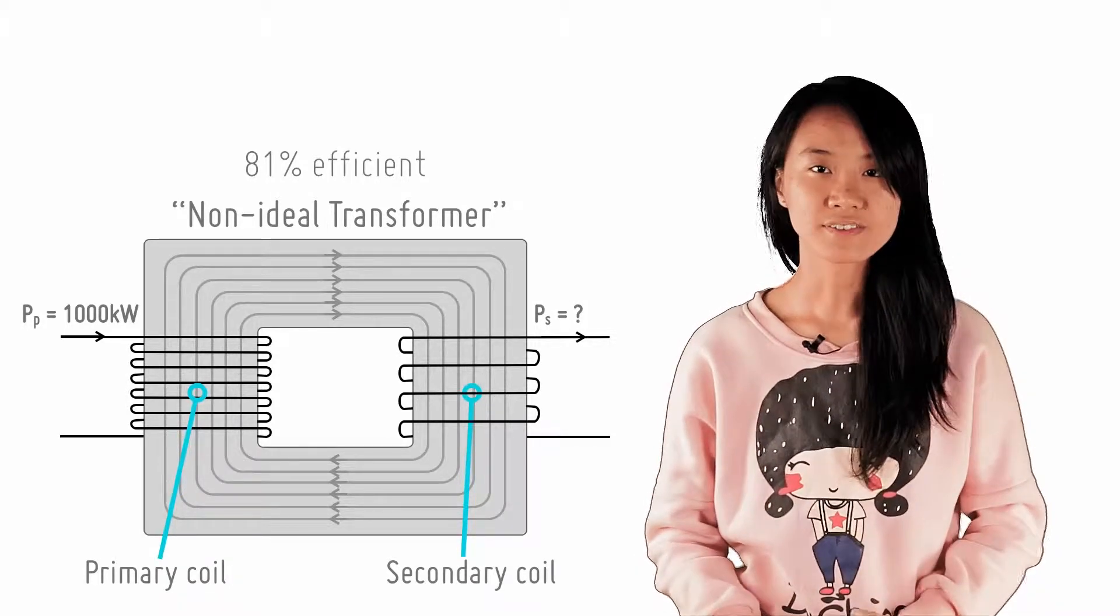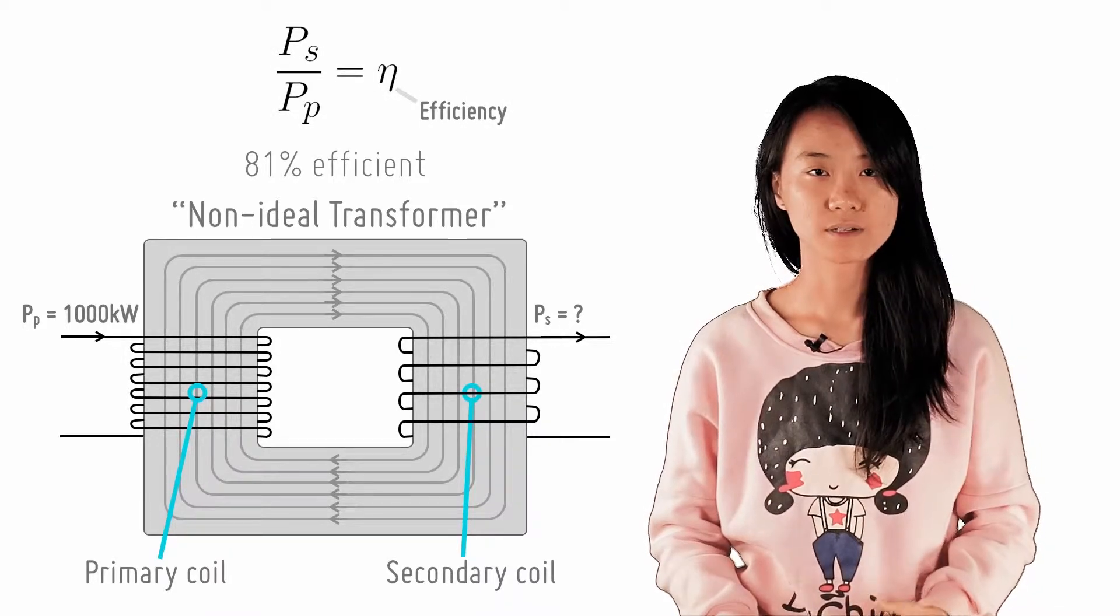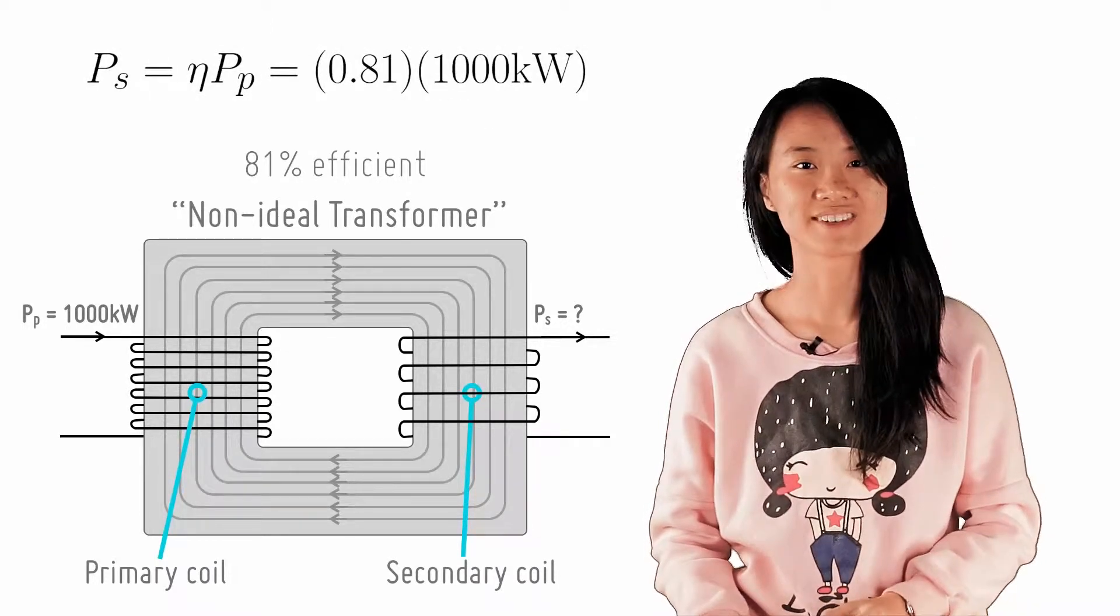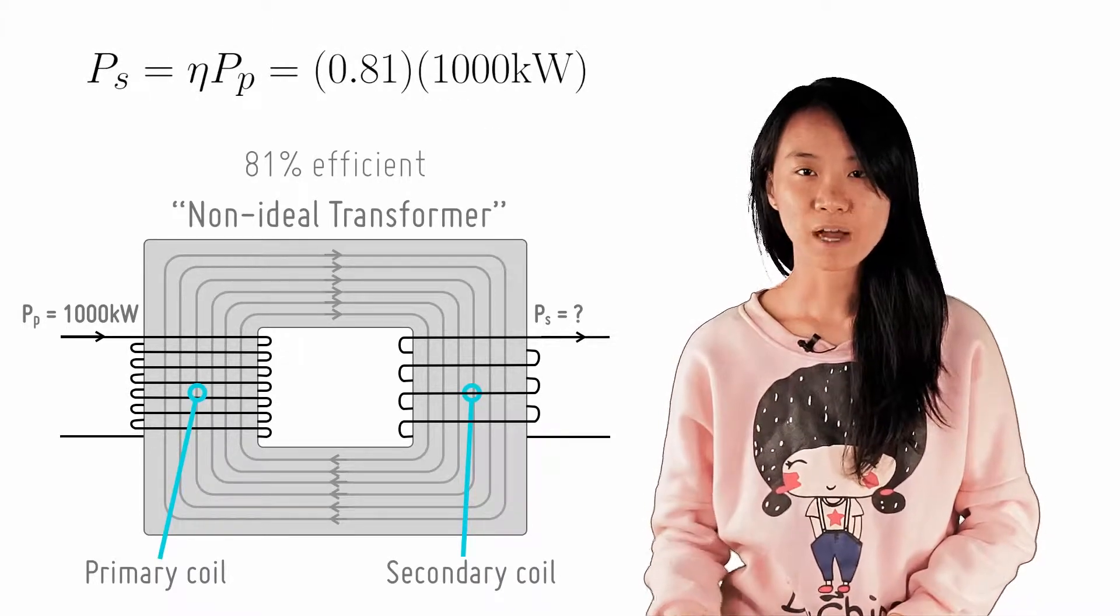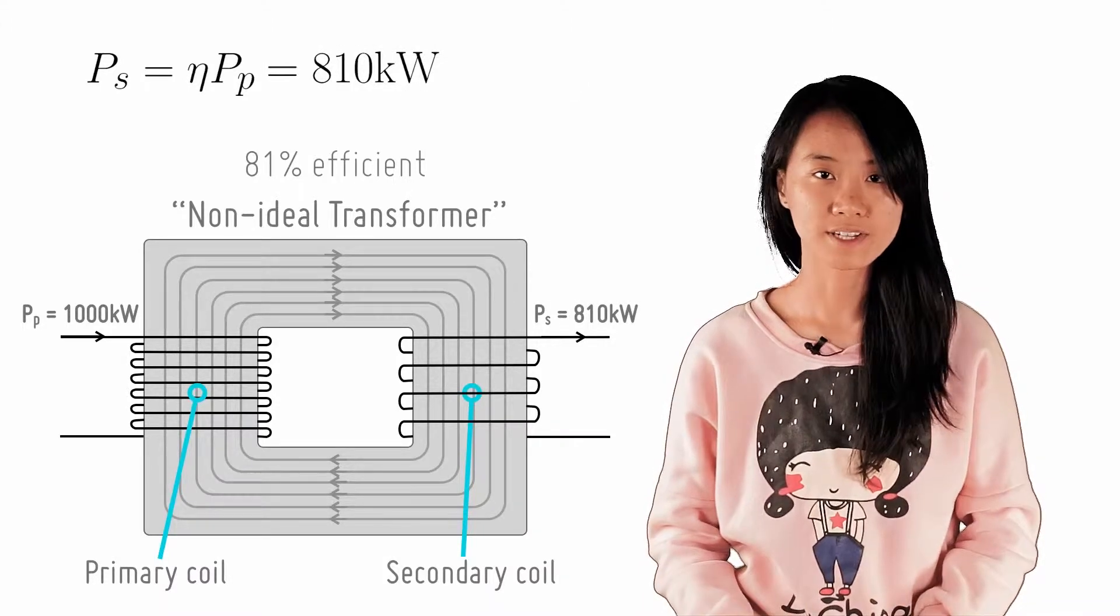Since the definition of efficiency is the output power over the input power, you can easily calculate the power output by multiplying the power input by the efficiency of the transformer. Thus, the power output is 81% of 1000 kW, which is 810 kW.